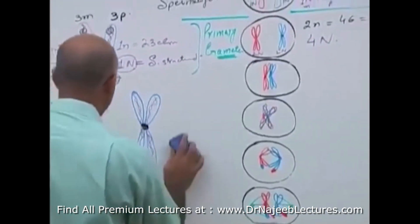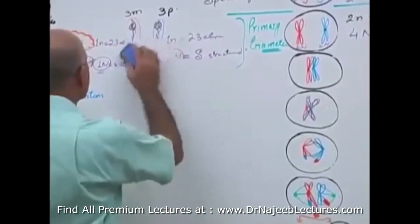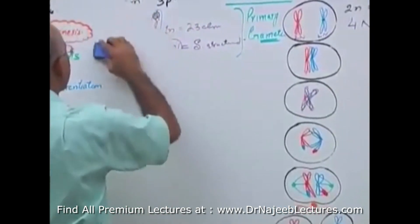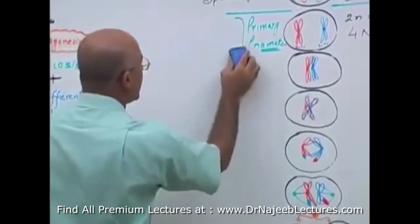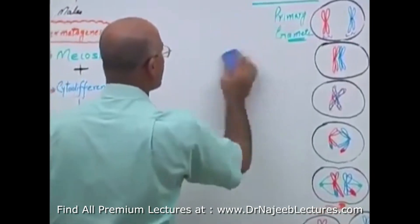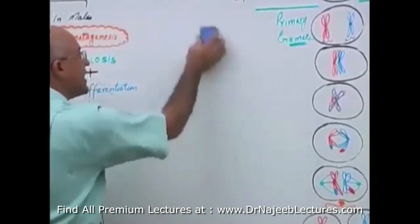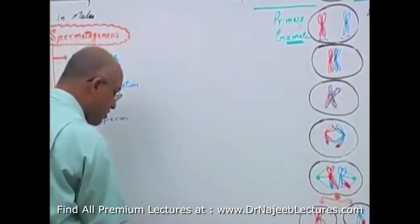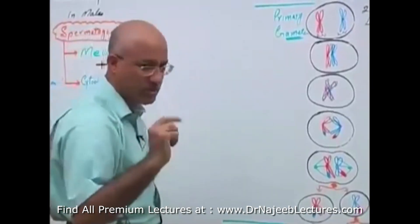After these fundamental concepts, we now come to some special processes that occur in meiosis 1 — processes that do not occur during mitosis.